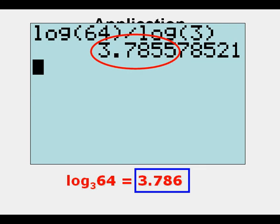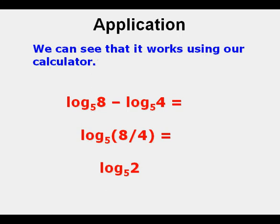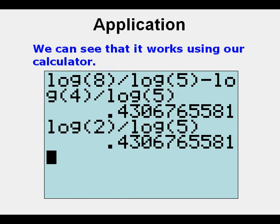Let's try subtracting logarithms. We have log base 5 of 8 minus log base 5 of 4, which equals the log base 5 of 8 divided by 4 — the quotient of 8 and 4. That gives us log base 5 of 2. We can verify with our calculator: log 8 divided by log 5 minus log 4 divided by log 5 gives the same result as log base 5 of 2, confirming the calculation is correct.